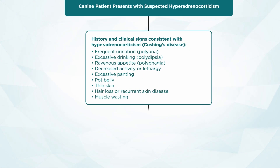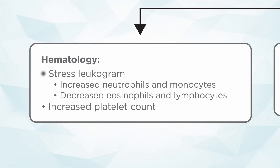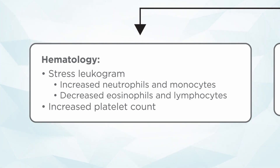Once you've decided that, you can start putting Cushing's higher on your differential list. Then we're going to run some routine lab work to make sure Cushing's disease still stays on our differential list, and also to make sure this dog will tolerate the medication we may be using. For a routine database, you're going to run a CBC or hematology, a chemistry profile or biochemistry, and a complete urinalysis with a good sediment exam. On hematology, include a stress leukogram — we see increased neutrophils and monocytes, decreased eosinophils and lymphocytes, and an increased platelet count, which can actually be quite high, well above the reference range.